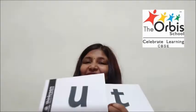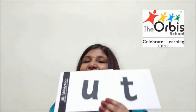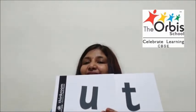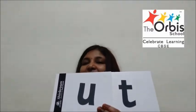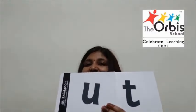Now, in part 3, we will be doing the 'ut' words. The sound of U is 'a', and the sound of T is 'ta'. So together it makes 'at'. A, ta, at.